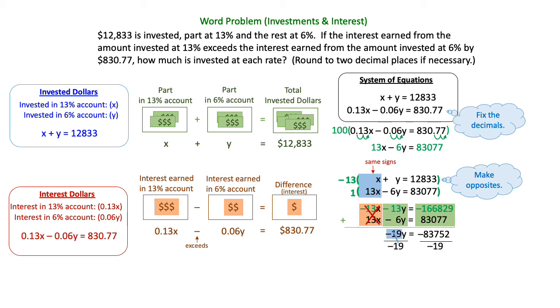I'm going to divide by that negative 19 on both sides. And when I divide the negative 83,752 by a negative 19, I'm going to get Y is equal to 4,408. And that is actually what has been invested in the 6% account because I allowed Y to represent that account.